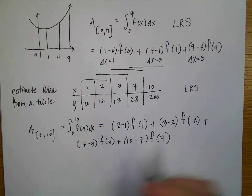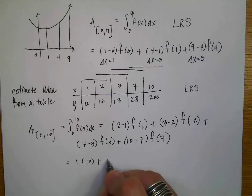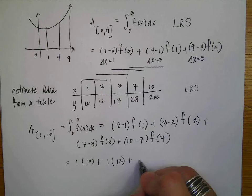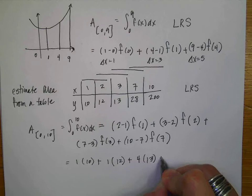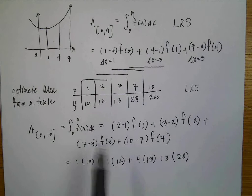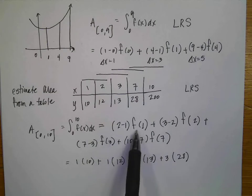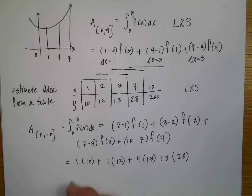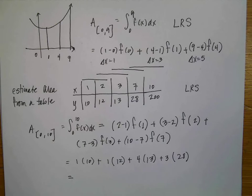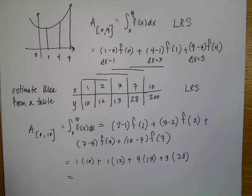These values come from the table. So this would be 1 times 10, plus 1 times 12, plus 4 times 13, plus 3 times 28. When you're doing the math from a table, you have to show where the delta x comes from and which height or y-value you're going to use, then you compute the actual calculation.